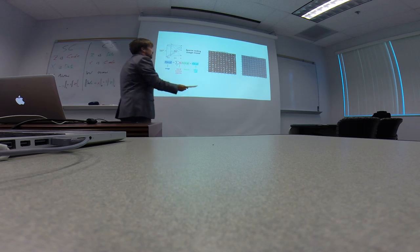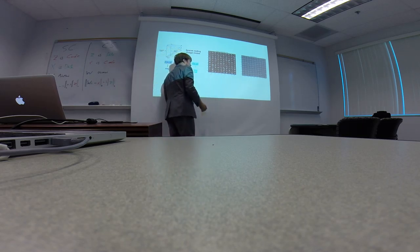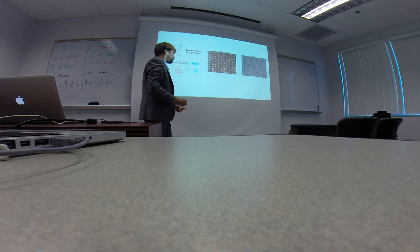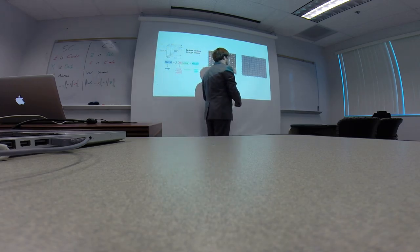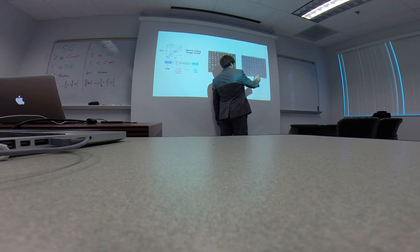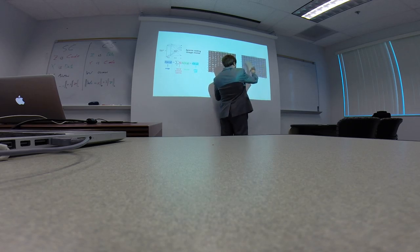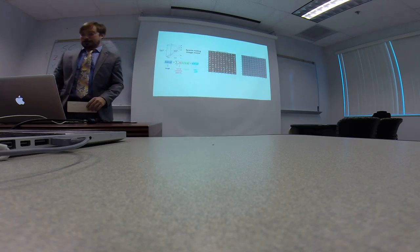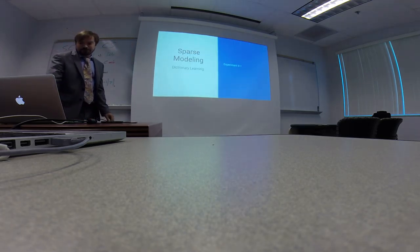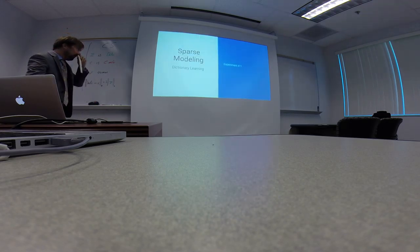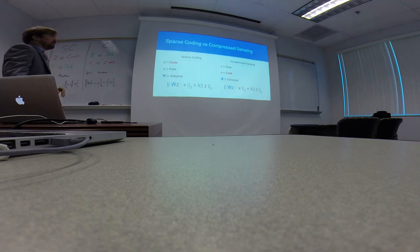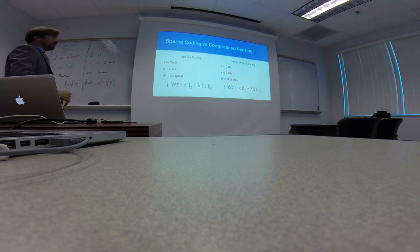If we take collections of handwritten digits — this is the MNIST dataset, where people were asked to write down digits as examples — and then learn a dictionary on that, analogous to the Netflix matrix factorization problem, you get a set of dictionary elements that has pen strokes and little bits of numbers. So now let's talk about sparse modeling versus compressed sensing.